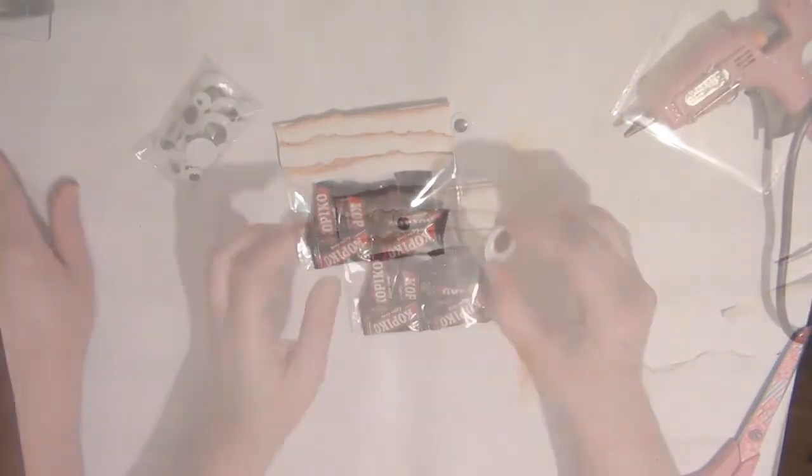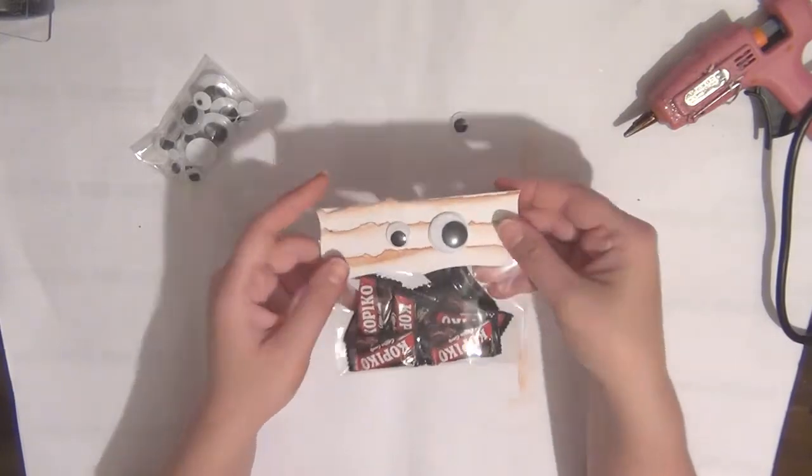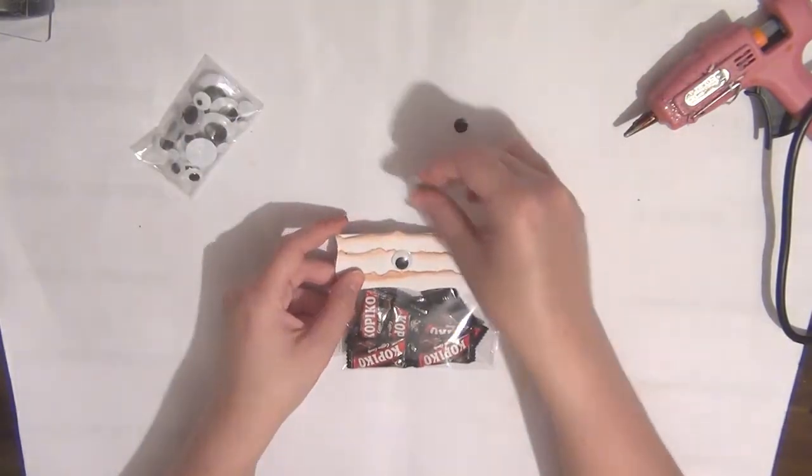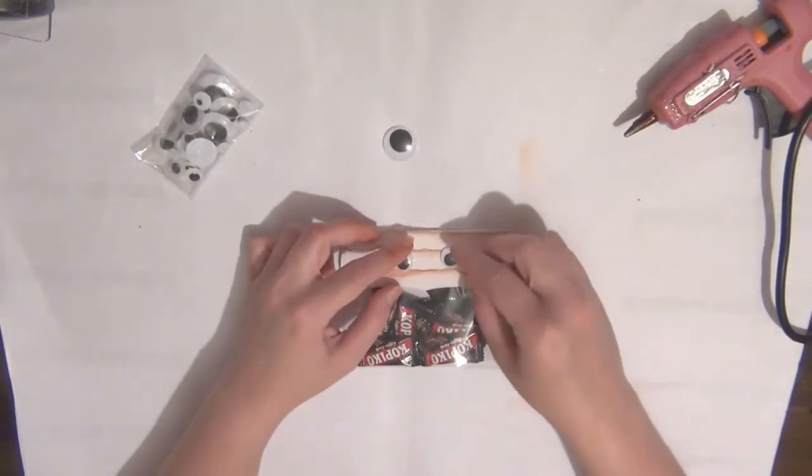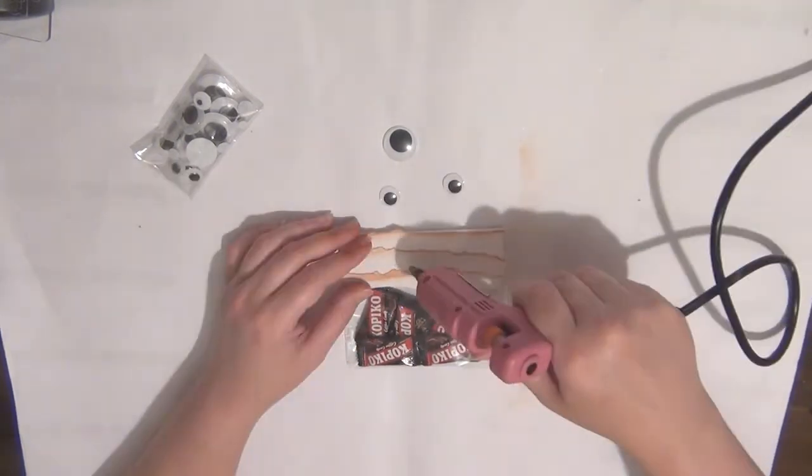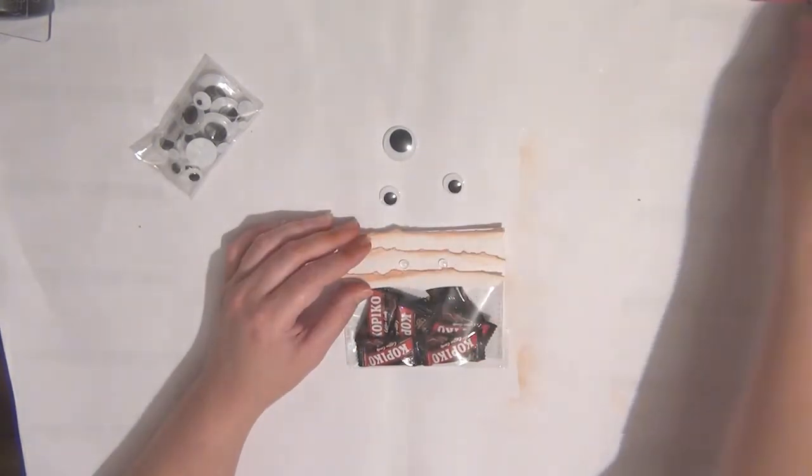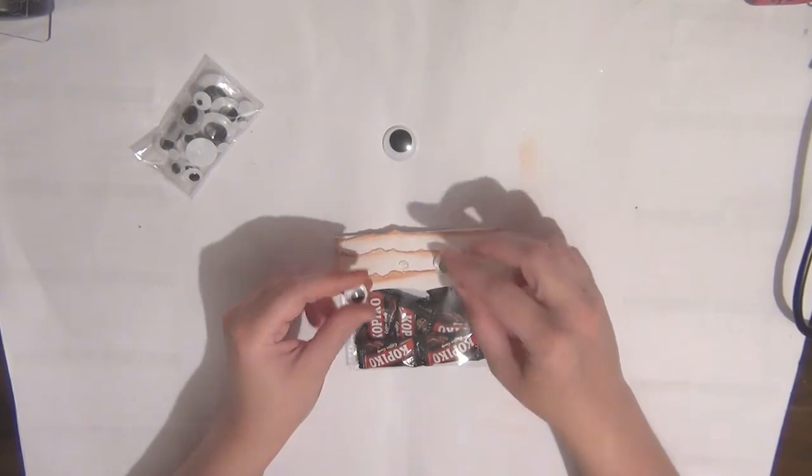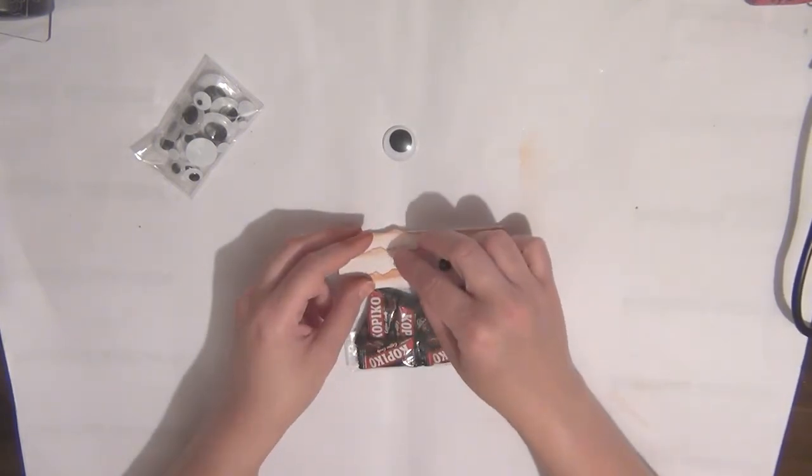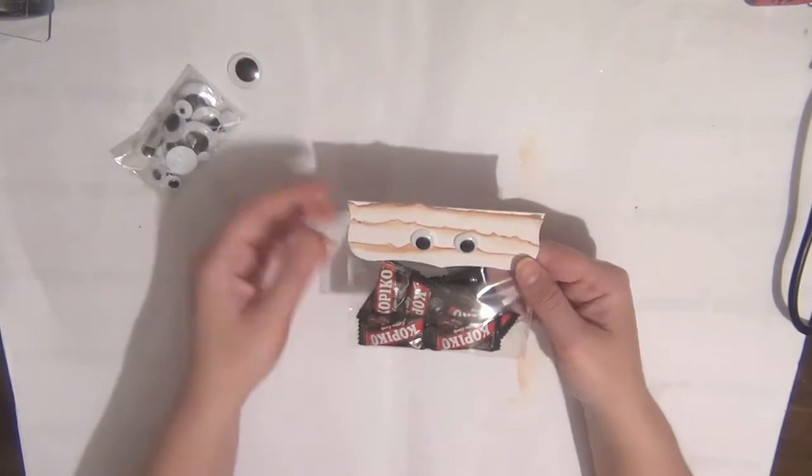The final step here is to add the googly eyes. As you can see here, I have got one larger than the other and you can definitely do that, but I decided to go for same size eyes. You can really do whatever you want at this point, so just adhere your eyes in place and your treat bag is ready.